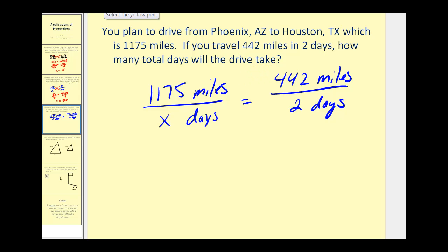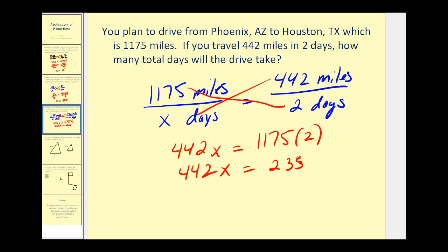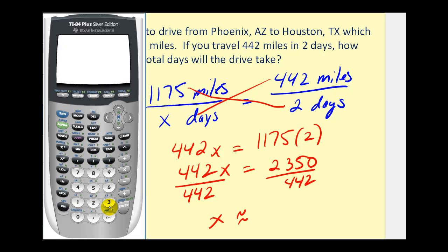Now we'll cross-multiply. 442 times x or 442x must equal 1,175 times two. So we have 442x equals 2,350. Dividing both sides by 442, x will be approximately equal to the number of days the total trip will take. Let's go to the calculator. 2,350 divided by 442 looks like it will take approximately 5.3 days.